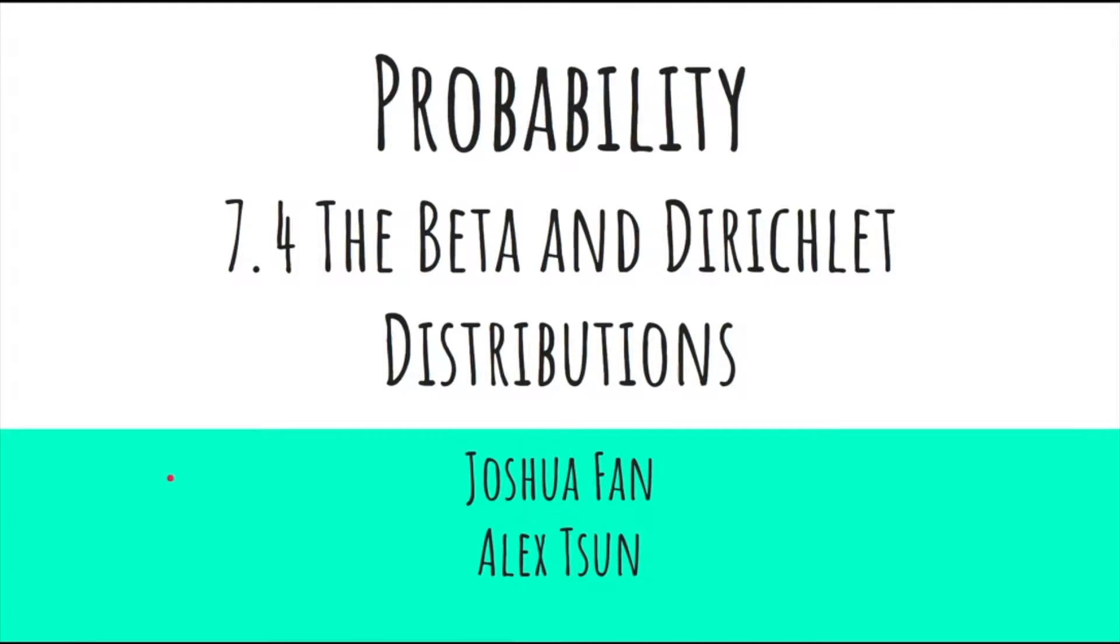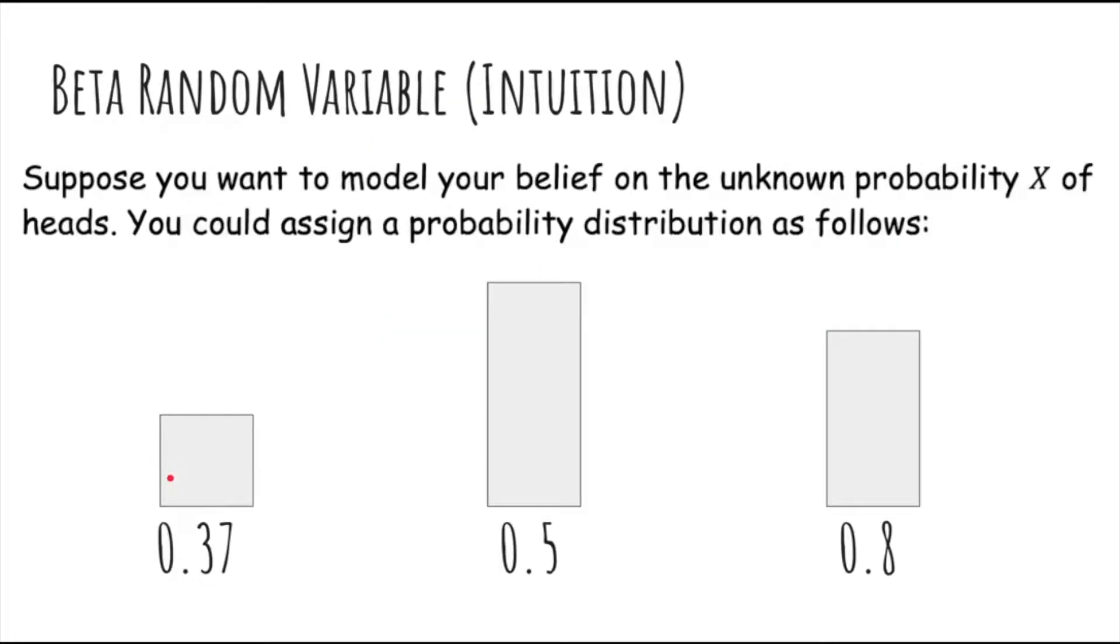Hi, in this video we'll talk about the beta and Dirichlet distributions. Let's say that you have a coin and you want to model your belief on the unknown probability x of heads.